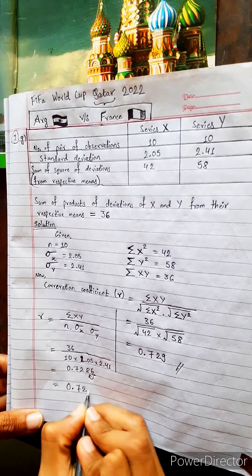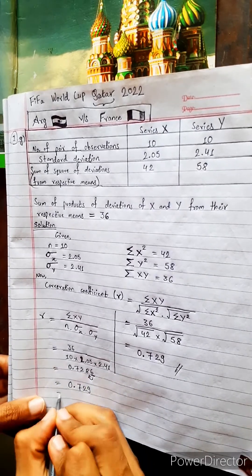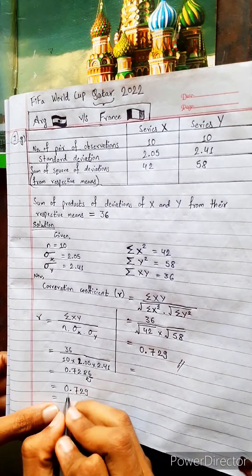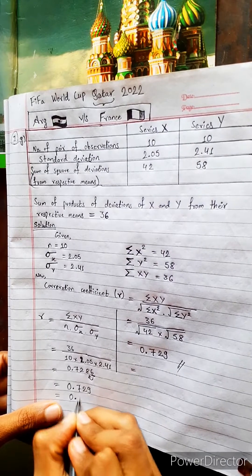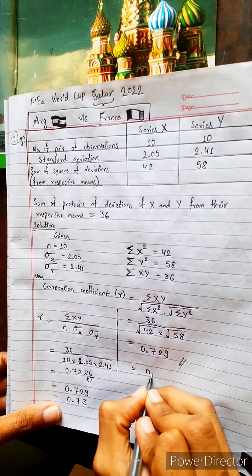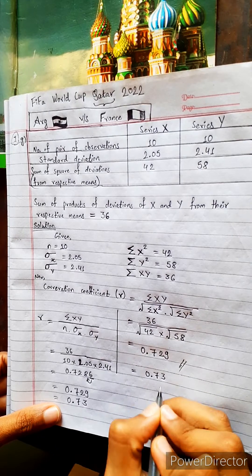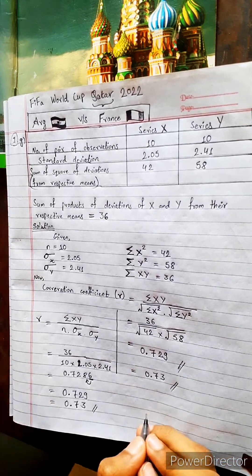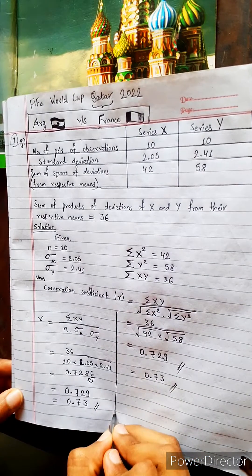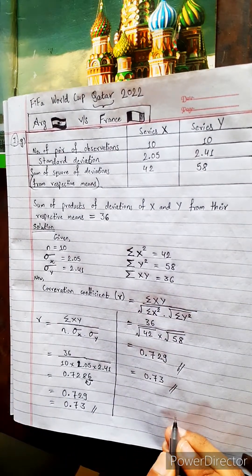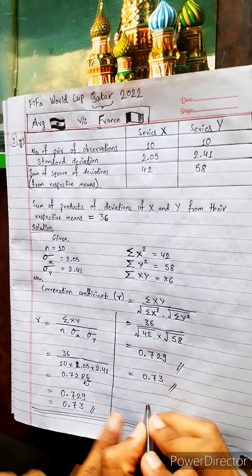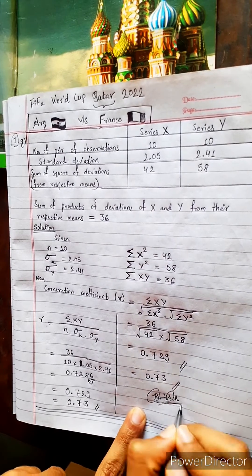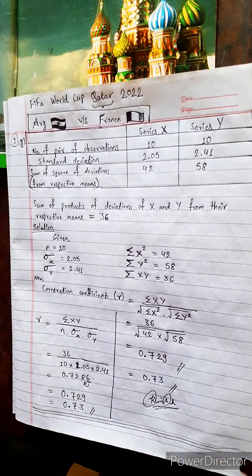After rounding off to two decimal places, we get r = 0.73 from both methods. Both formulas give the same answer — 0.73. We have got the right answer. Let's wait for the final match today. Thank you!